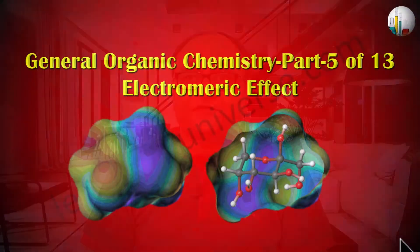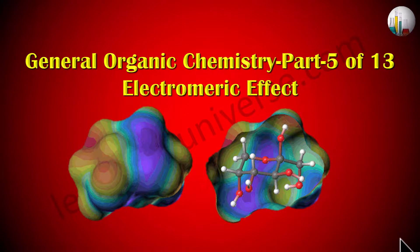We are currently doing the lesson General Organic Chemistry and I have already made 4 parts. The first part was about the hybridization of carbon and inductive effect. Part 2 was about resonance effect. Part 3 was aromaticity, in which I made 4 videos. Part 4 was hyperconjugation. And today is the turn of part 5 of 13, named as Electromeric Effect.